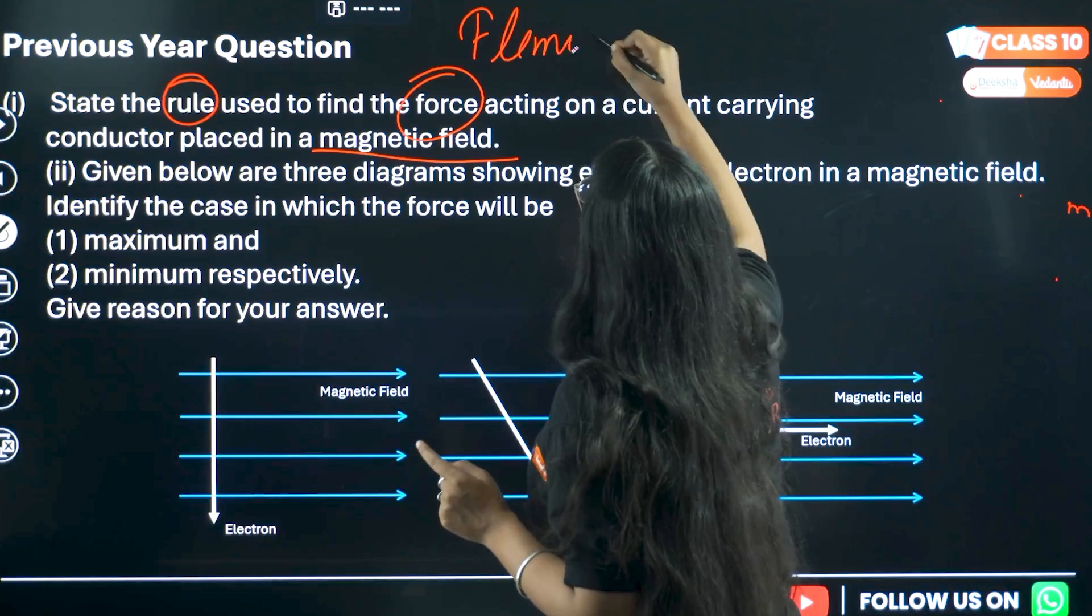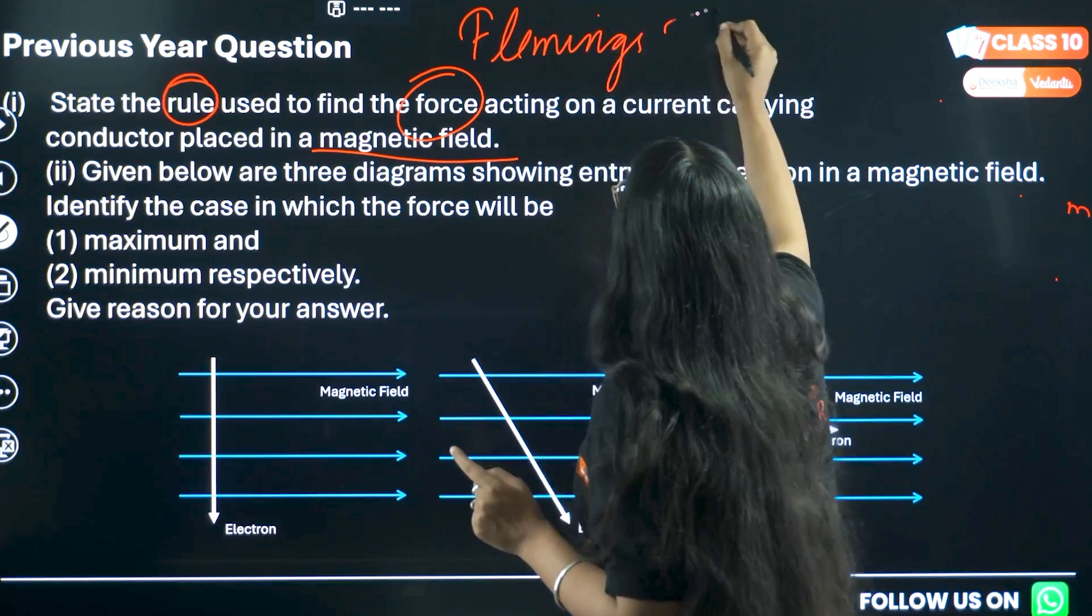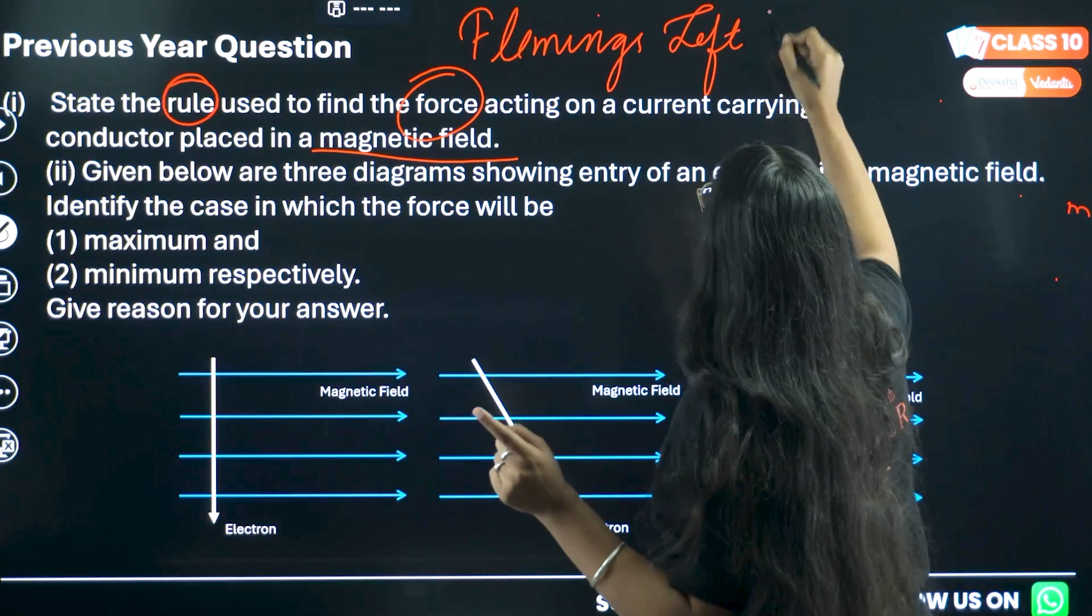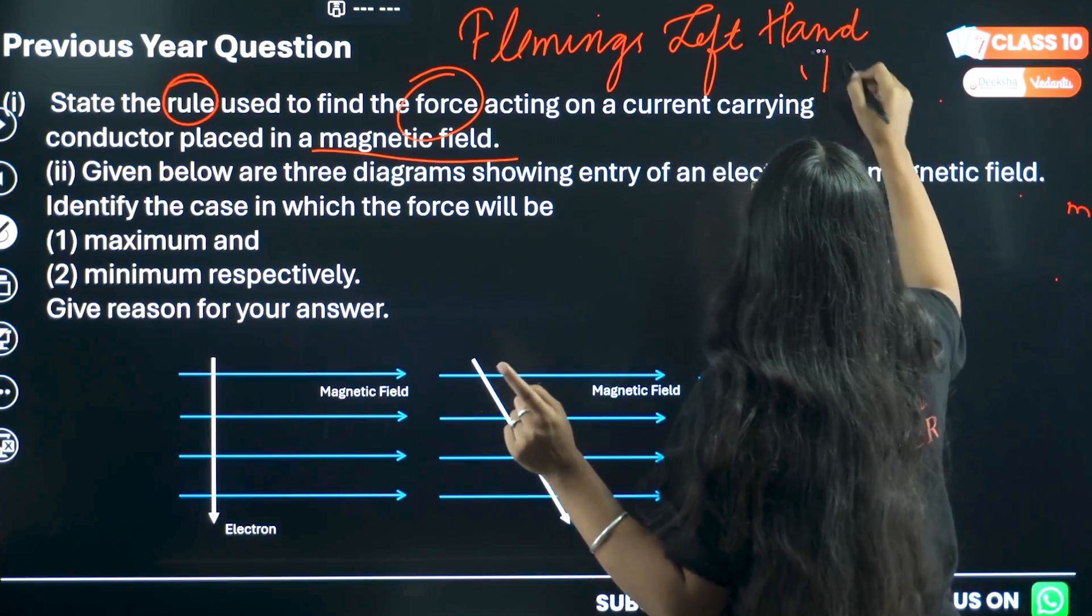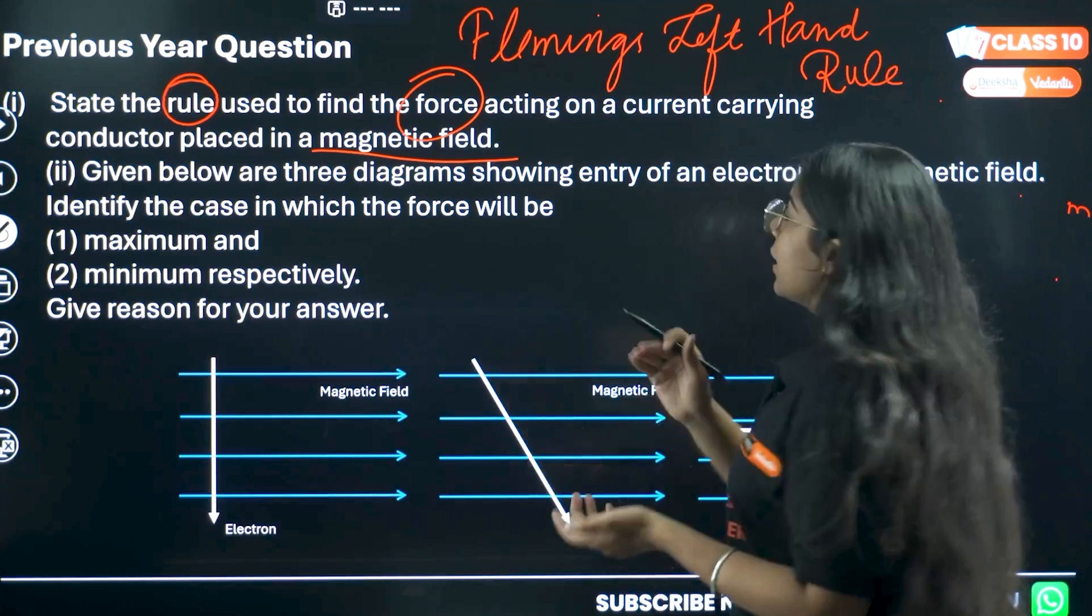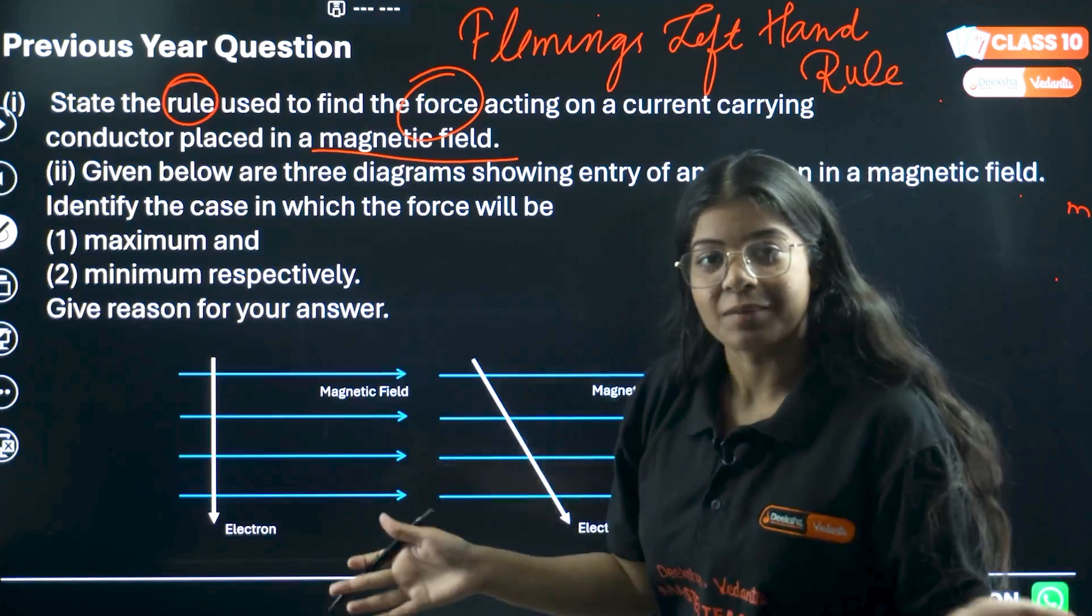It's given by Fleming's left hand. Which hand rule? Left hand. Remember it's not right hand, it's Fleming's left hand rule. The first part of the question is already done.